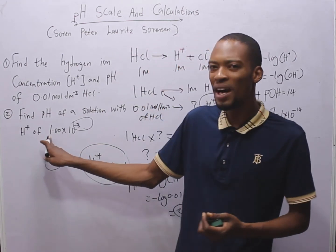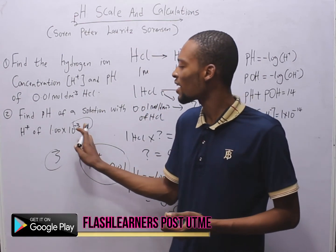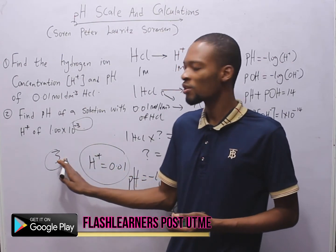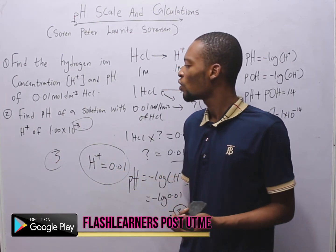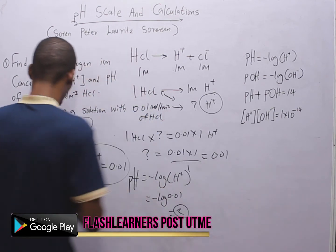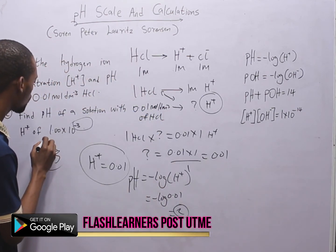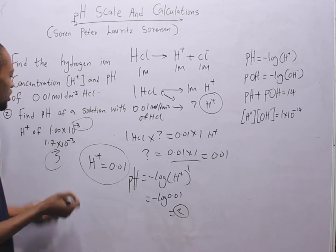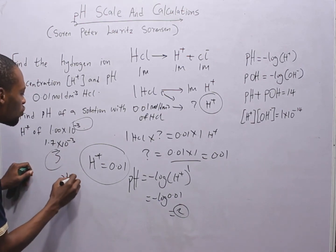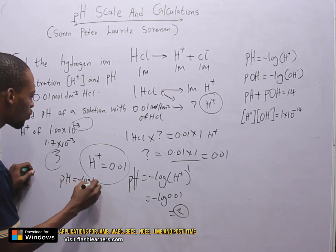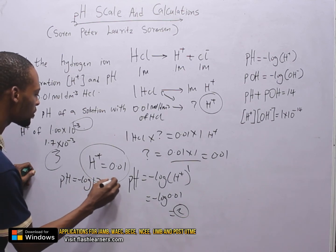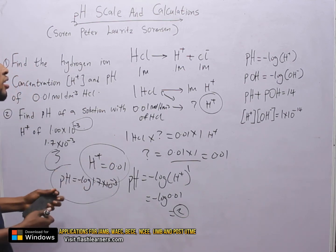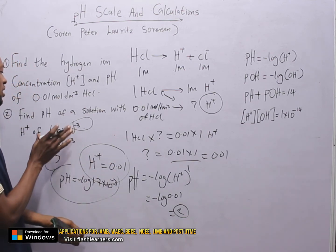So long here is 1. 1.00 times 10 raised to the power of minus 3, so the pH is 3. What if it were 1.7 times 10 raised to the power of minus 3? In this case, the pH will simply be minus log 1.7 times 10 raised to the power of minus 3. Or to avoid confusion...